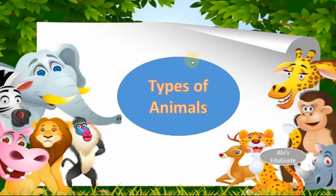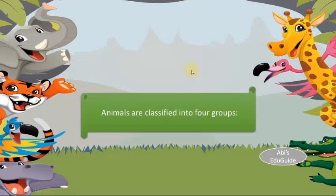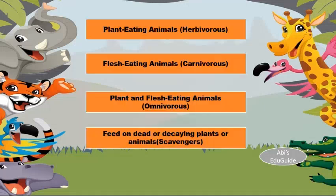Hi everyone, today's topic is types of animals. Animals are classified into four groups according to their eating habit. They are herbivores, carnivores, omnivores, and scavengers.